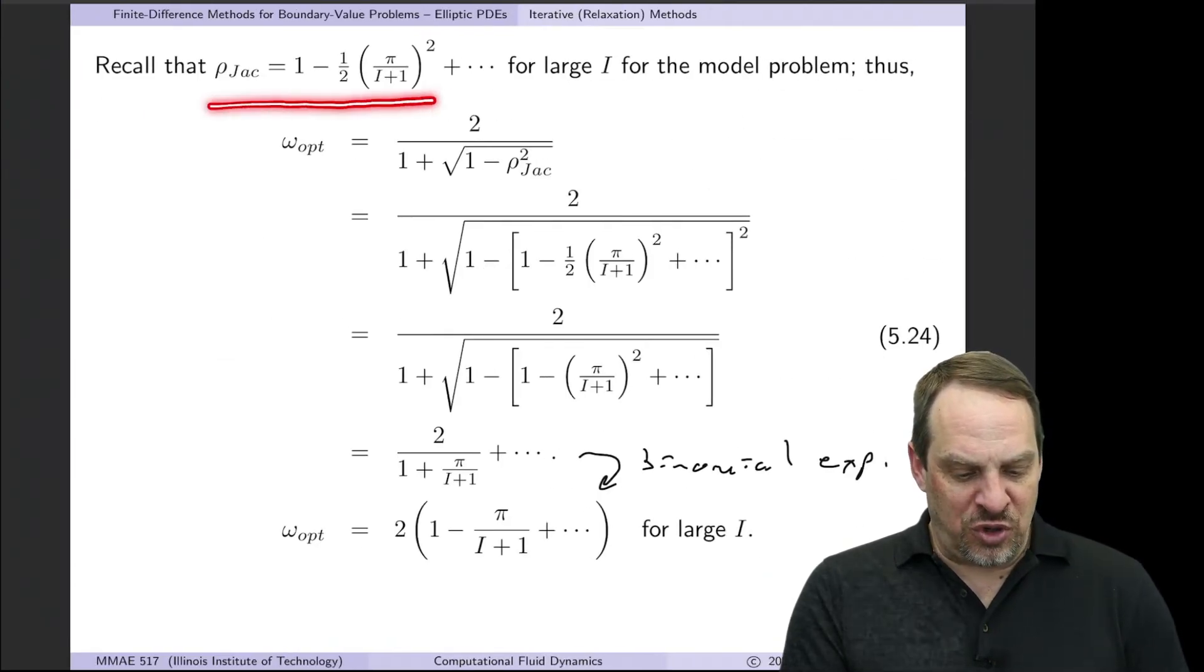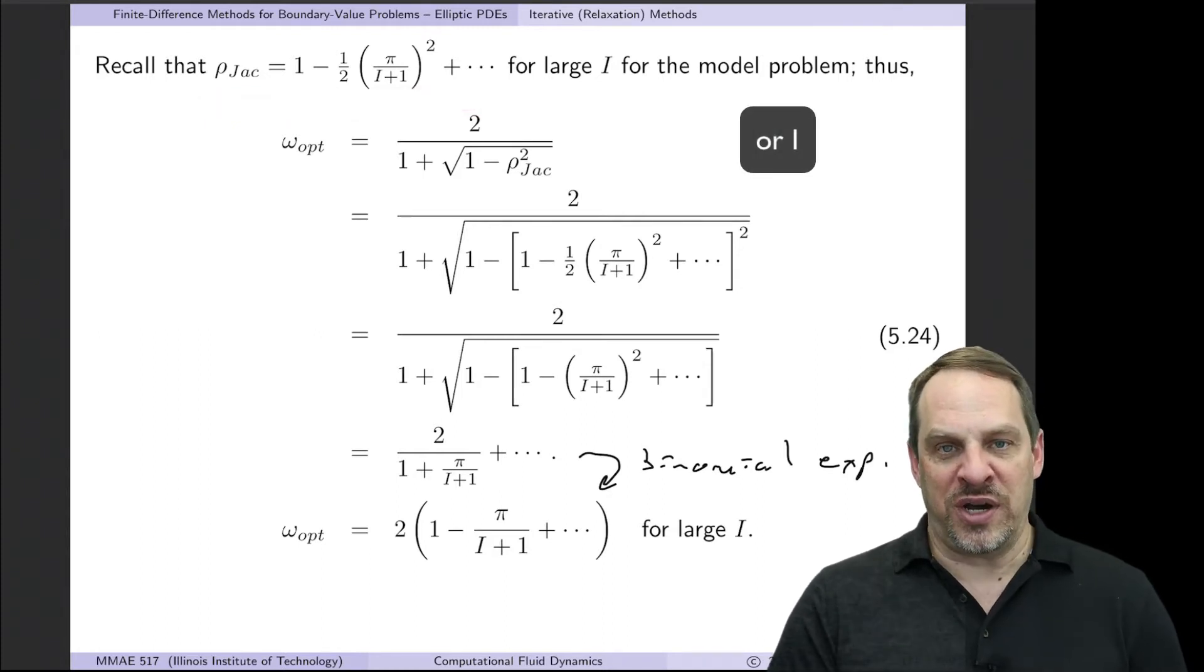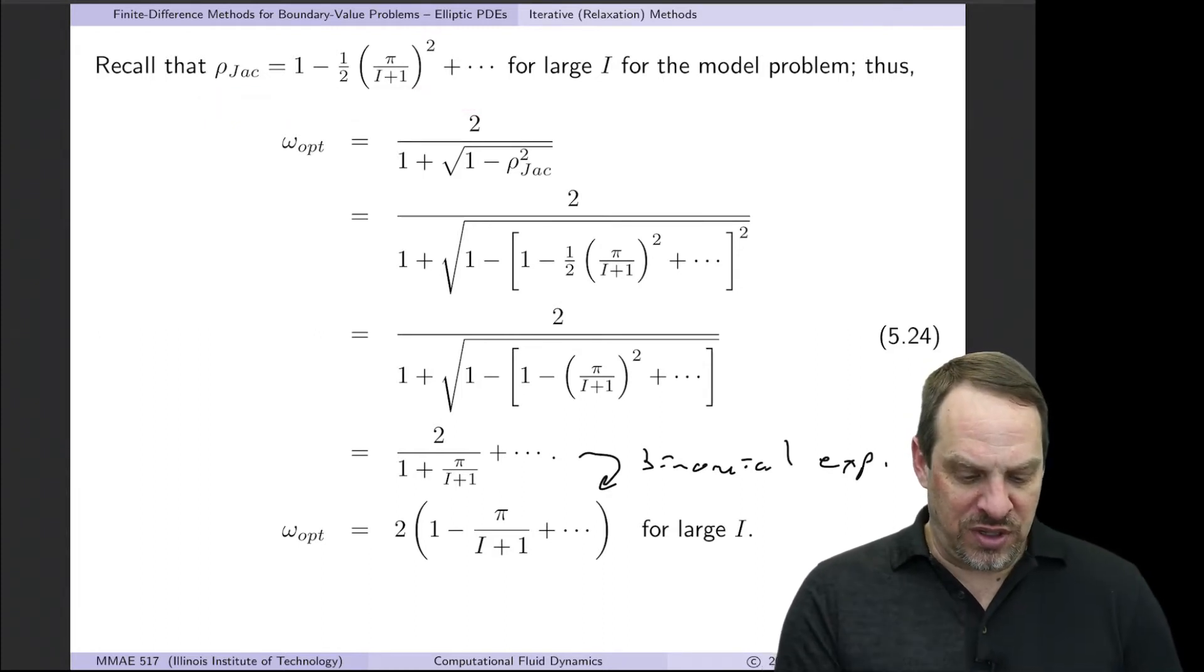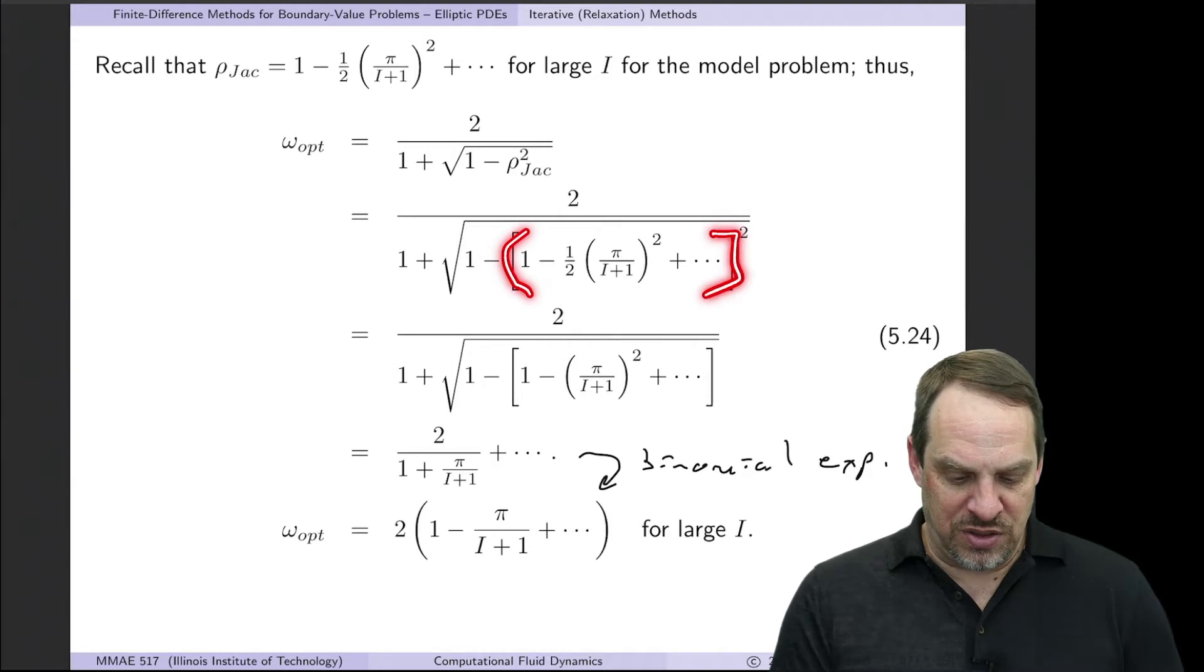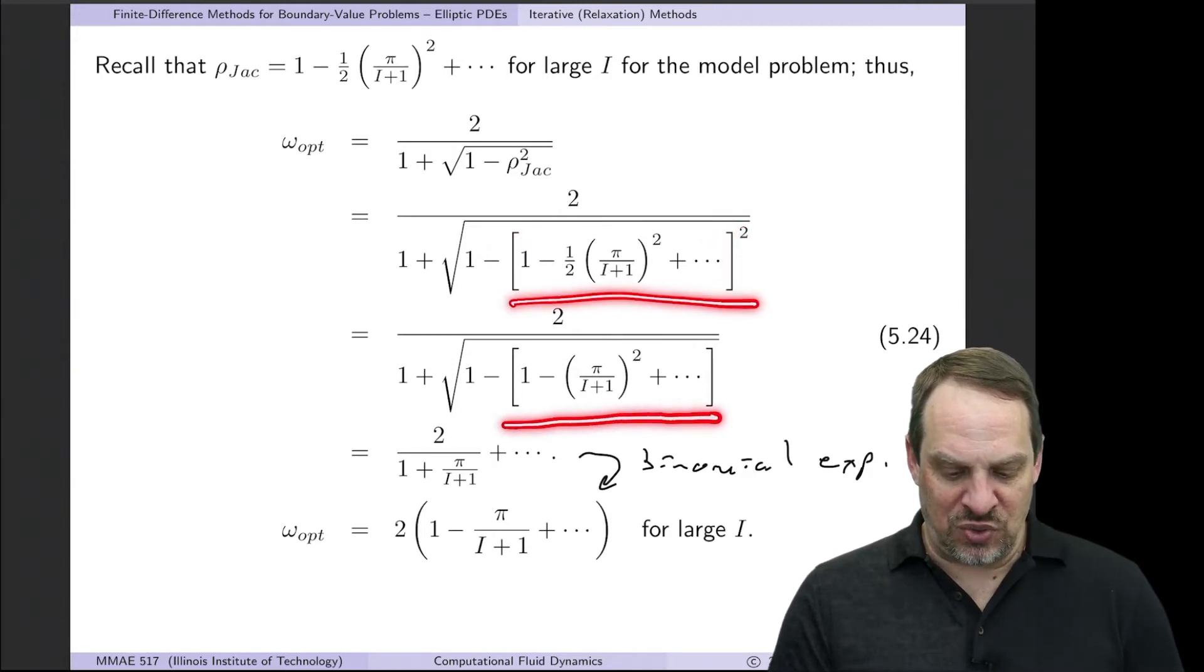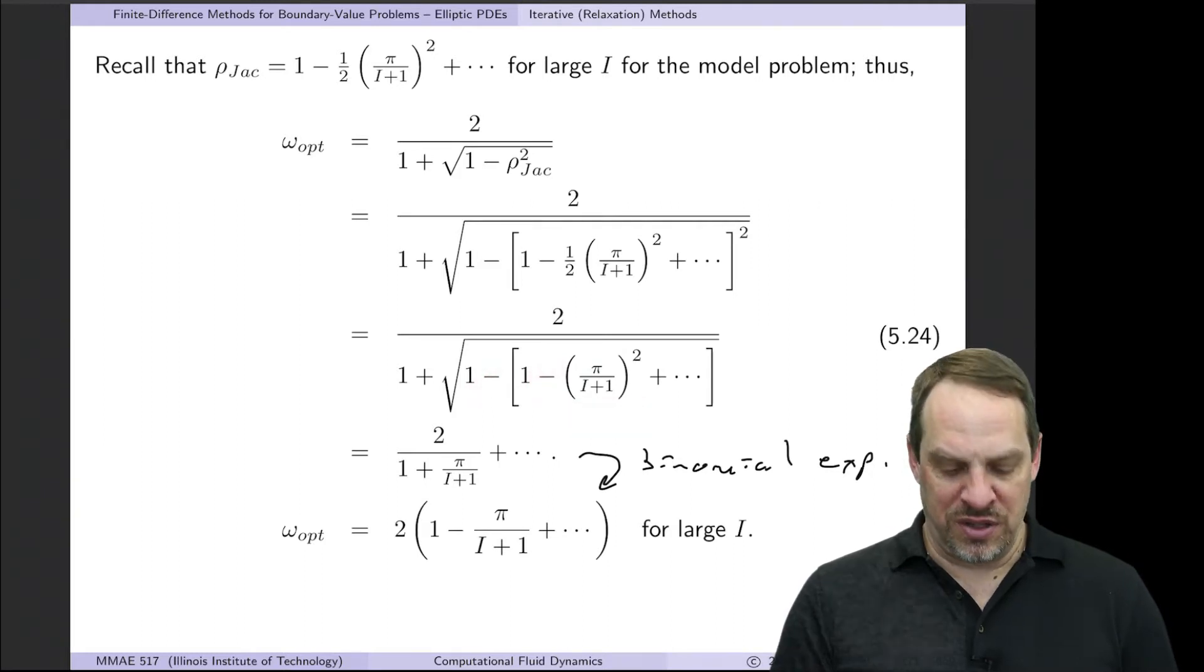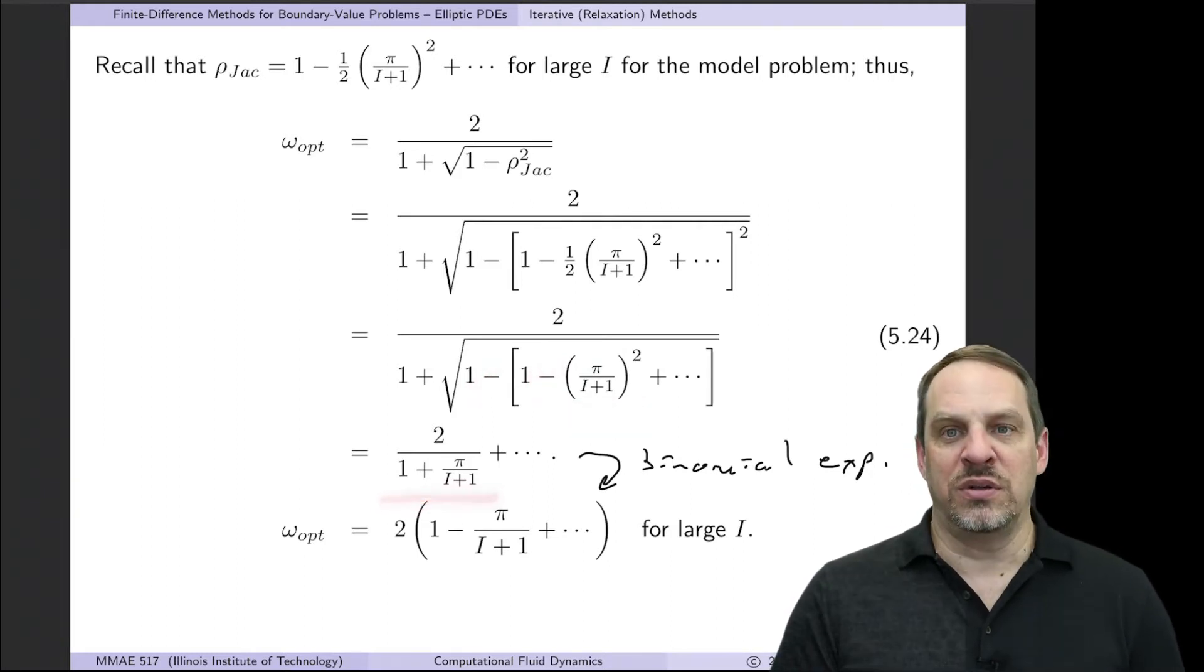So remember, the spectral radius for Jacobi for very large I is 1 minus 1/2 times (pi/(I+1))^2. If we substitute that in here for the spectral radius for Jacobi, you can see that here, we square that, and we get 1 minus (pi/(I+1))^2. 1 minus 1 cancels, and minus minus becomes plus, so we have the square root of the square.